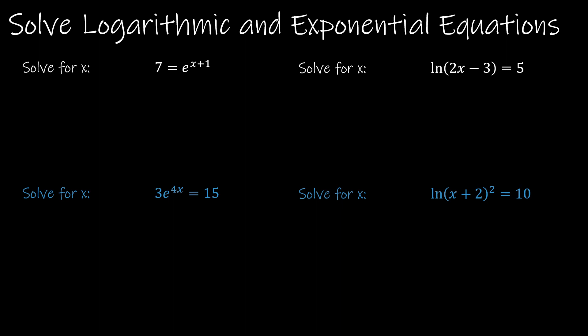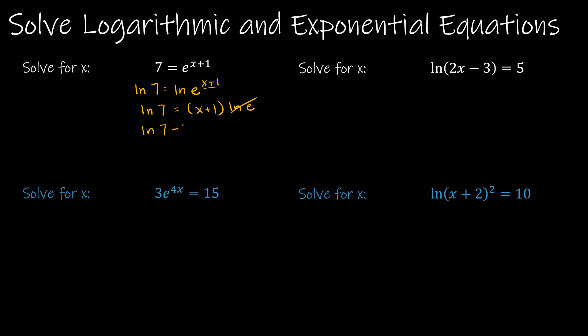Now let's solve logarithmic and exponential equations. For exponential equations, get the exponential by itself first. In the first example, e to the (x+1) is already isolated, so take the natural log of each side. The natural log of e to the (x+1) brings the exponent down: (x+1) times natural log of e equals natural log of 7. Since natural log of e equals 1, we get natural log of 7 equals x plus 1, so x equals natural log of 7 minus 1.